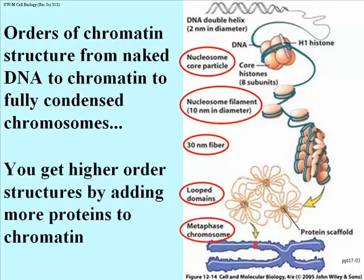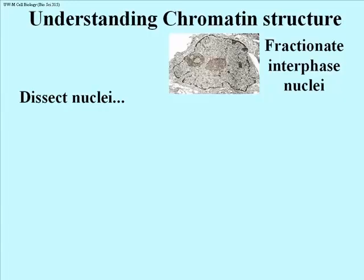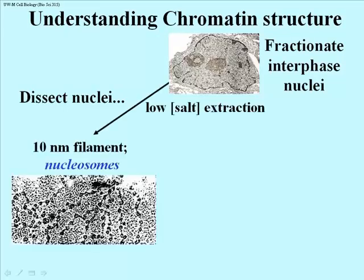Each of the chromatids then becomes a chromosome in its own right in a daughter cell. So there's our metaphase chromosome. You get these higher-order structures because more non-histone proteins have attached to the chromatin to force it to fold and coil into even more compact shapes. Here's how we come to understand chromatin structure. I have a photograph of a nucleus in a cell, and if you fractionate the nuclei and treat them with a low-salt concentration, then look in the electron microscope, you see 10 nanometer filaments.